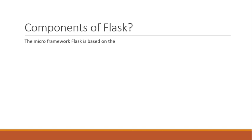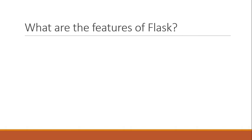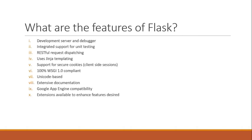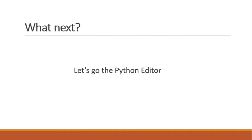The micro framework is based on three major components: first is the Pocoo project, second is Werkzeug, and third is Jinja2. The features of Flask include a development server and debugger, integrated support for unit testing, RESTful request dispatching, Jinja templating, support for secure cookies which is a client session, WSGI 1.0 compliant, Unicode based, extensive documentation, Google App Engine compatibility, and extensions available to enhance desired features.